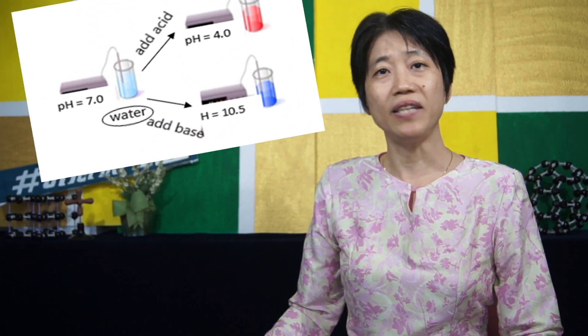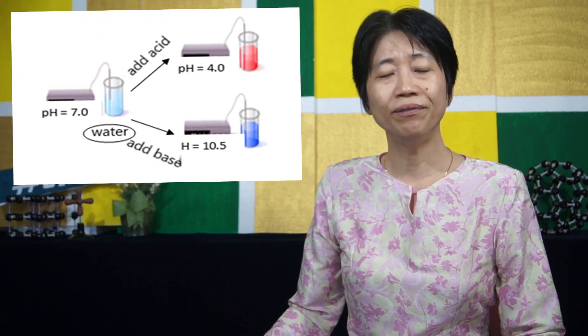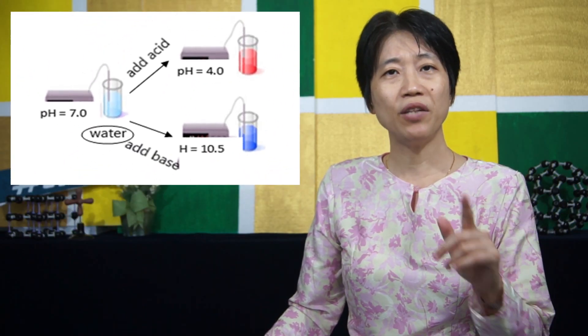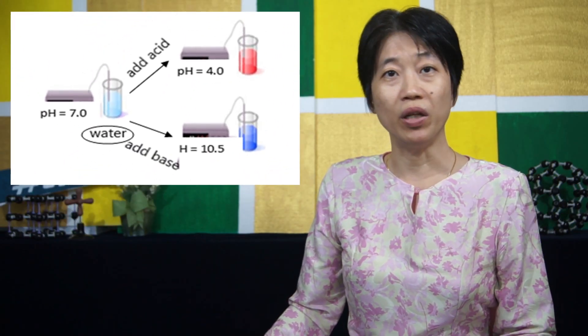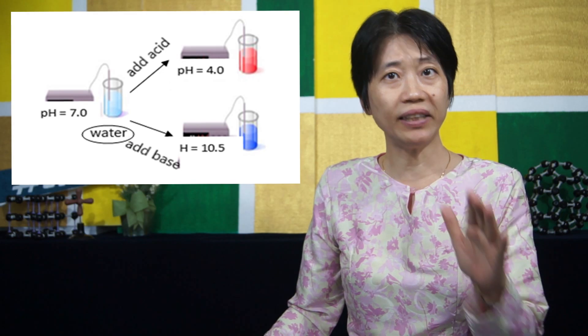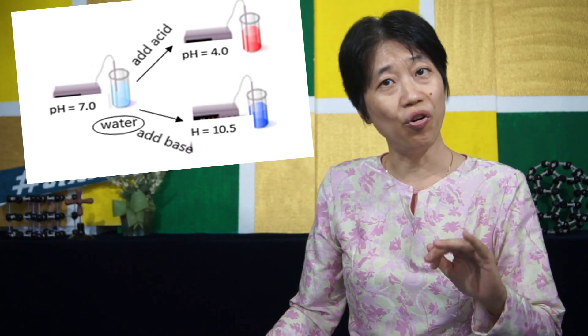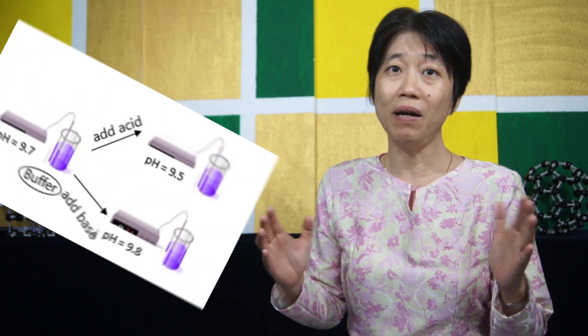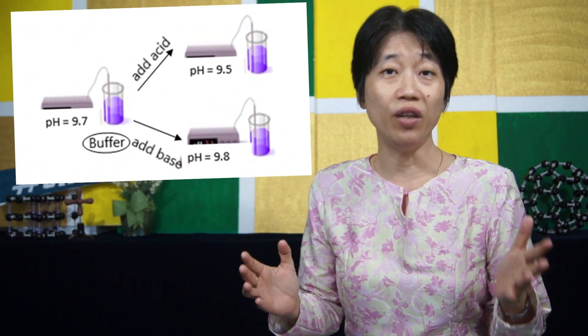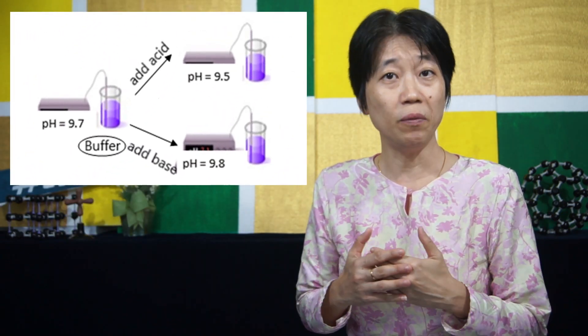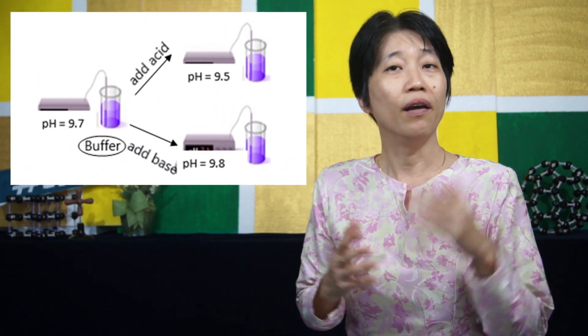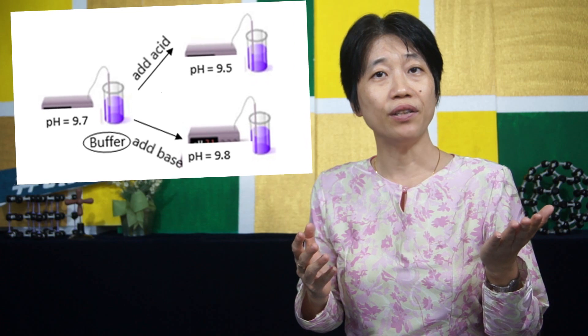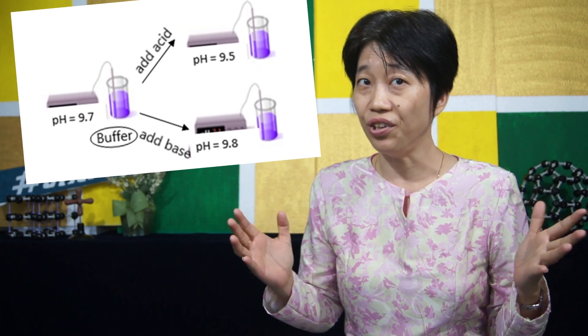When some acid and base is added to water, the pH of water will change drastically from 7 to 4 or 10.5. But when a buffer solution is added with acid or base, the pH does not change drastically. Why?